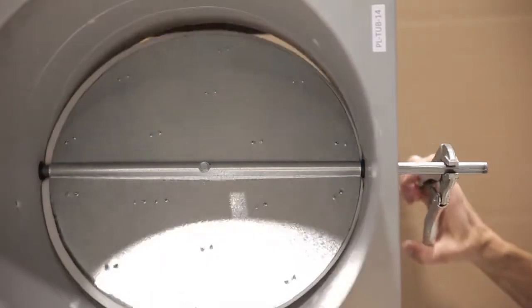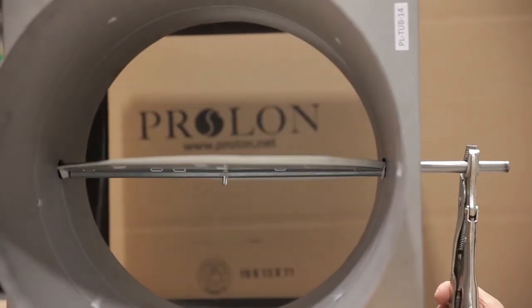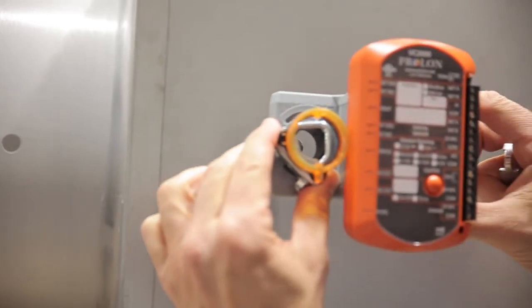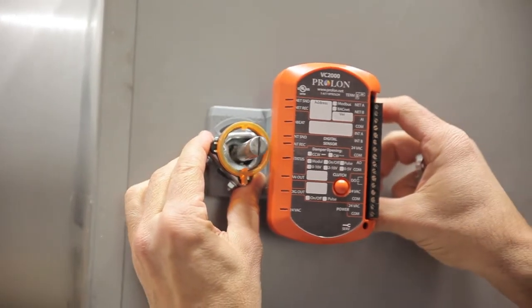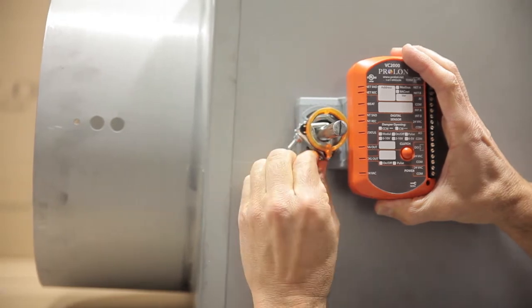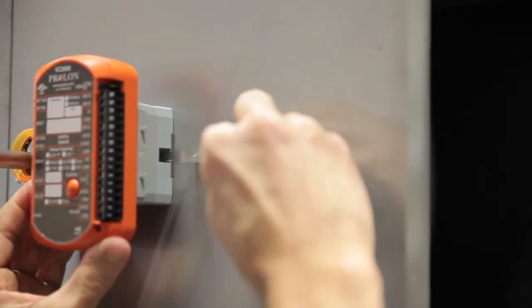Ensure that the VC2000's mounting clamp is also in the closed position and matches the opening direction of the damper. Slip the clamp over the damper shaft, tighten the mounting nuts and install the anti-rotation bracket with self-tapping screws.